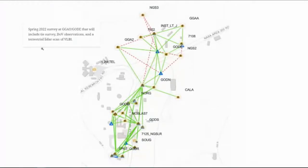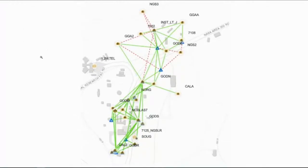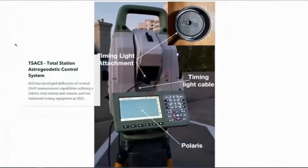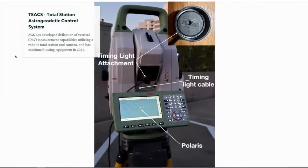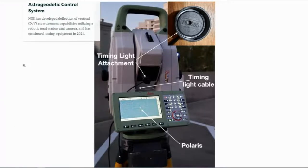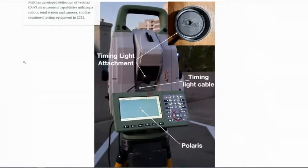The other thing that we'll incorporate is deflection of the vertical observations. I gave an update on this a few months ago. NGS, we had a geodesist here that actually developed a mechanism to collect DOV observations using the camera from our robotic total station. It runs through a routine, stores the data, and basically took a timing light installation to be able to look at the different frames as the robotic total station tracked the celestial object.